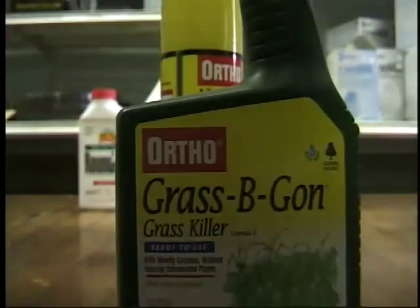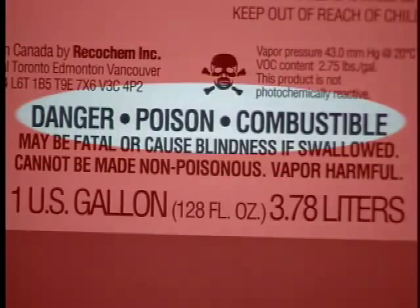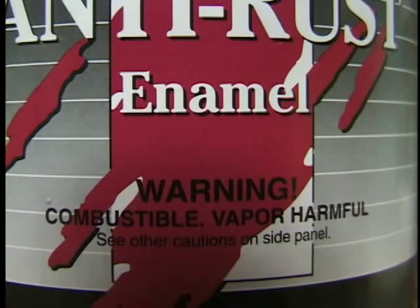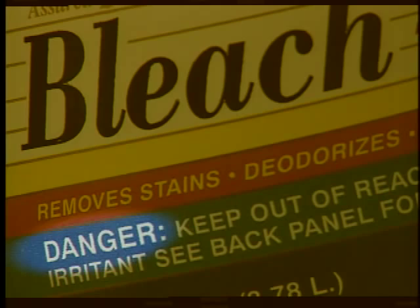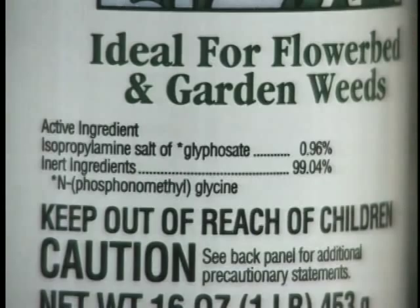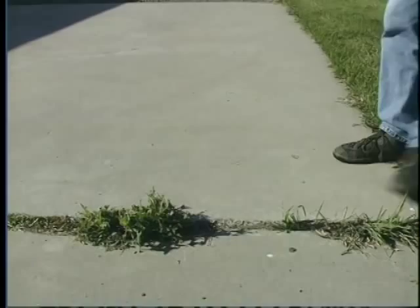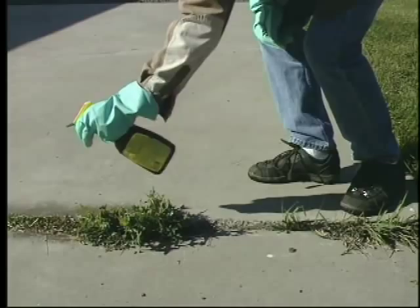Products with 'DANGER-POISON' along with a skull and crossbones symbol are highly toxic and deadly at low doses. 'DANGER' by itself, without the word poison, indicates that the product is corrosive and can cause irreversible eye damage or severe skin injury. 'WARNING' products are either moderately toxic to our body systems or can cause moderate eye or skin irritation. 'CAUTION' products are either slightly toxic to our body systems or may cause slight eye or skin irritation.